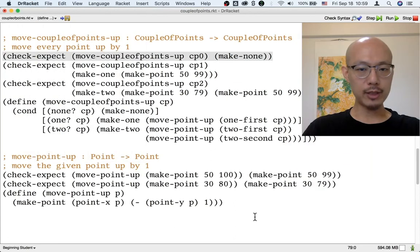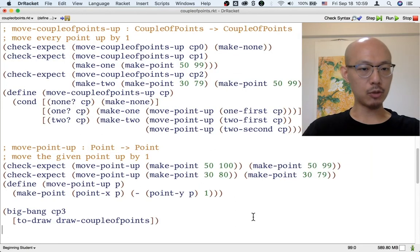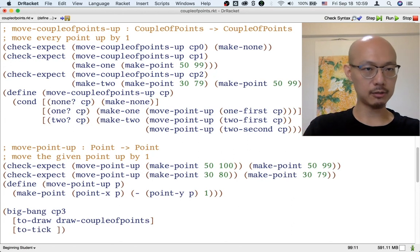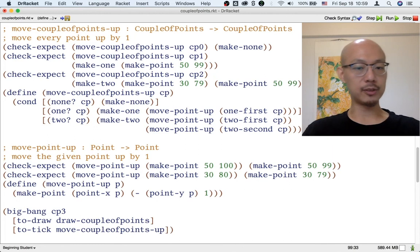So now we're ready to make a big bang that's a little bit more interesting because it doesn't just draw a couple of points. It should also move them up. Let's do that on every tick of the clock. So 28 times per second, let's say, we're going to use the moveCouplePointsUp function to move the points up.